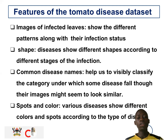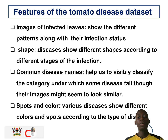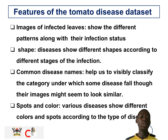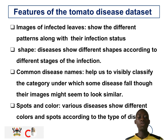Features of the dataset include images of infected leaves, which show different patterns along with the infection status. The shape of diseases shows different shapes according to the different stages of infection and common disease names. Various diseases also show different colors and spots according to the type of disease.